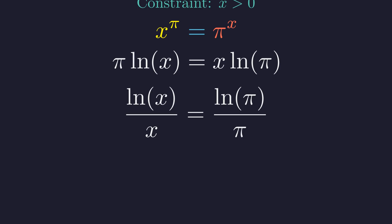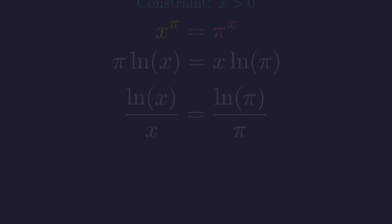And here's the key insight: we've just transformed our entire problem into a question about a single function. Let's study this function. We'll call it f of t, defined as the natural log of t divided by t. Our goal is to find all positive values of x where f of x equals f of π. We already know x equals π works, but are there others?